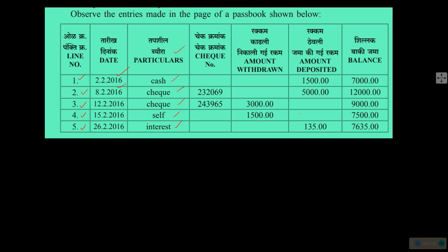These are transactions or activities that happened on different dates — 2nd, 8th, 12th, 15th, and 26th of February 2016. A cash transaction happened first: deposited means money given to the bank or coming into your account, so rupees 1,500 was deposited and the balance became 7,000. The second line is 8th February where a transaction was done with a cheque — every cheque has a unique cheque number — and a deposit of 5,000 was made, adding to your account.